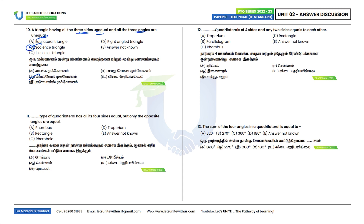Eleventh question: Which type of quadrilateral has all 4 sides equal? All 4 sides are equal but opposite angles are equal — this is the property of a rhombus. Option A. Twelfth question: Which quadrilateral has any 2 sides equal to each other? Any 2 sides equal to each other is the property of a kite. Option A.